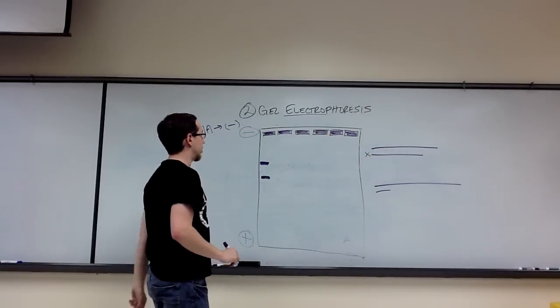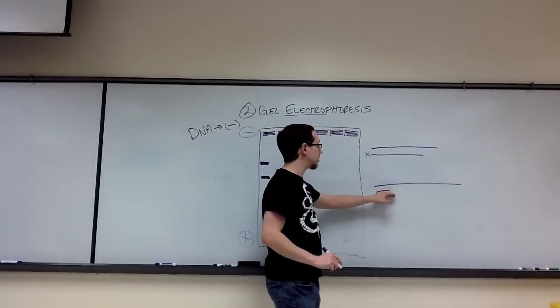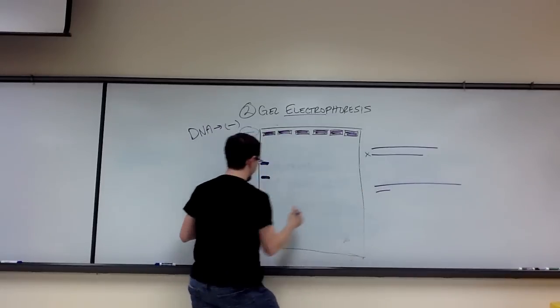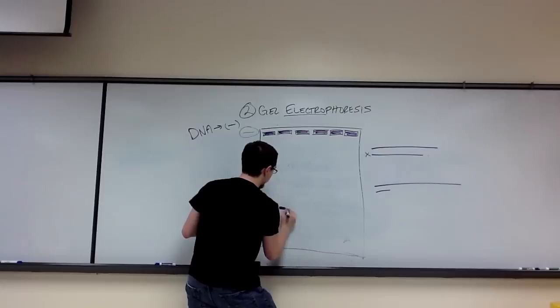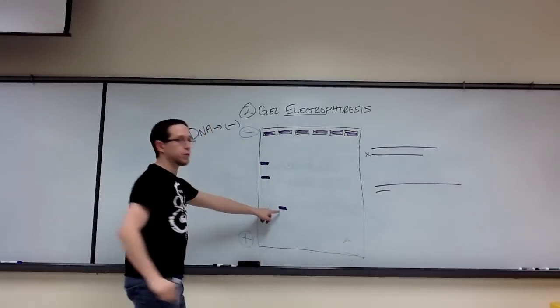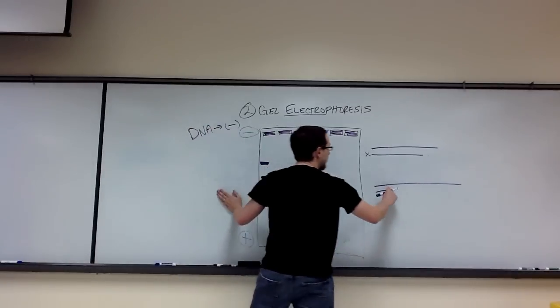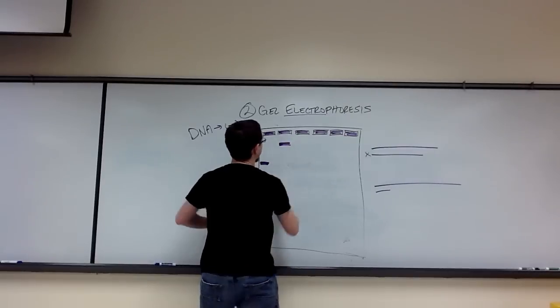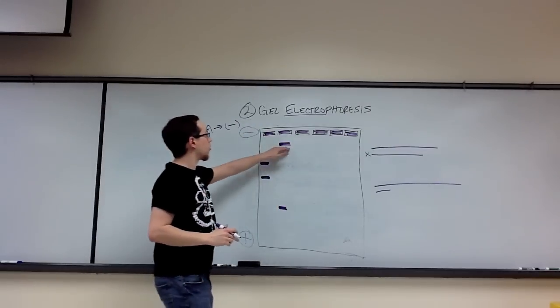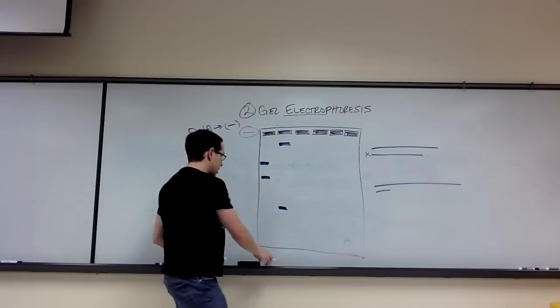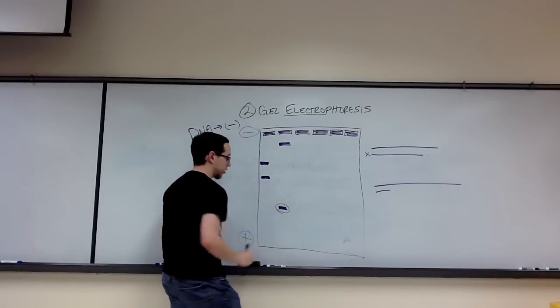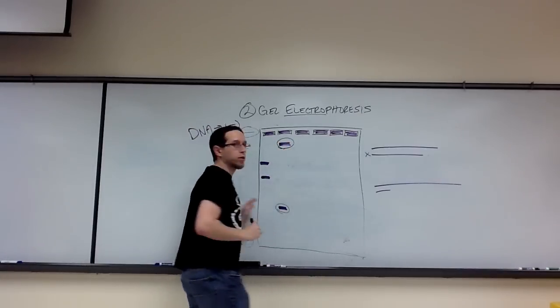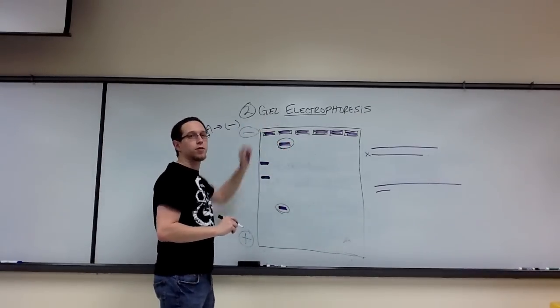If we do the same with this individual's DNA, we would see that this small fragment can run very far in the gel, so a collection of fragments of that size are going to make a band much farther down. This particular fragment is probably going to run very high in the gel because it's so large it's going to have difficulty moving through. This band represents a collection of the smallest fragments of DNA, and this band represents a collection of the largest fragments of DNA in this particular example.